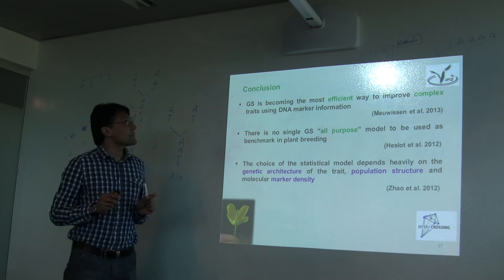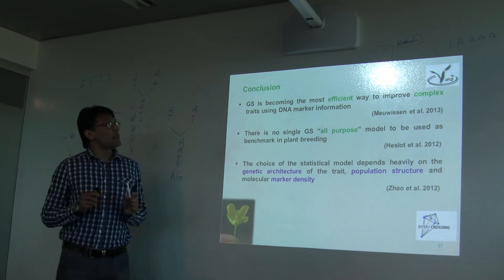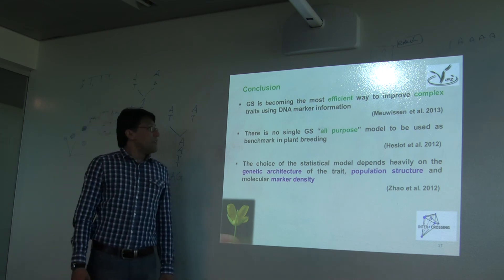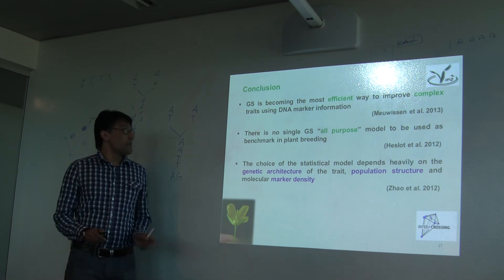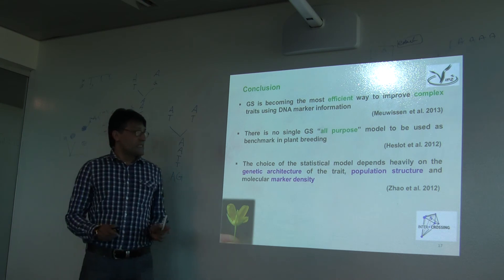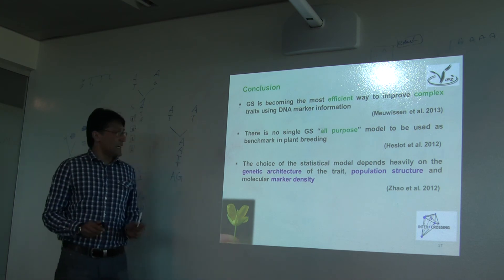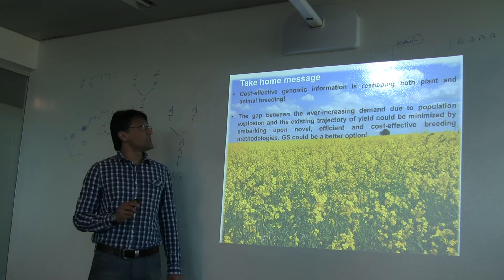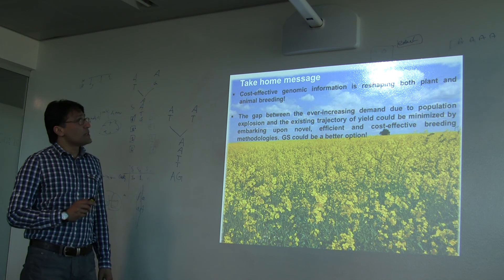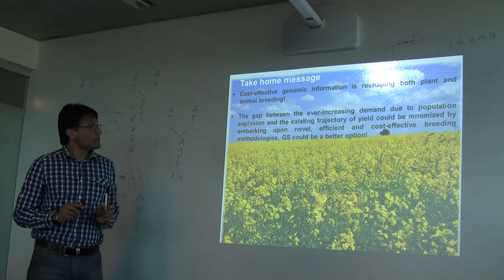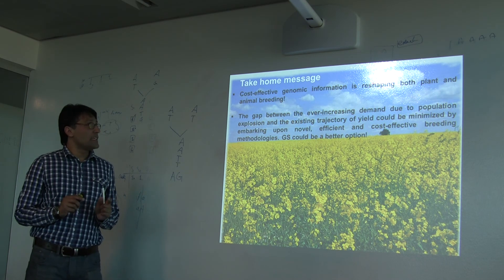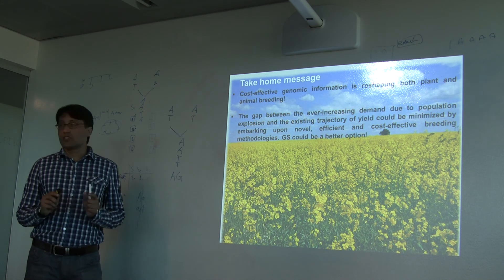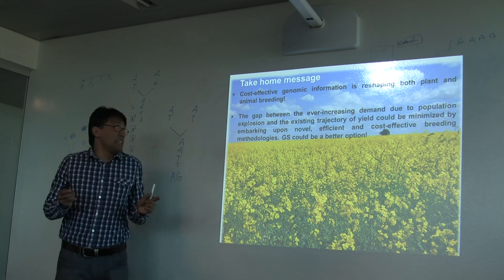Finally, coming to the conclusion: genomic selection is becoming the most efficient way to improve complex traits using DNA markers or SNP data. There is no single genomic selection model to be used as a benchmark in plant breeding — the choice of statistical model depends on the genetic makeup of the trait, population structure, and marker density. The take-home message is that cost-effective genomic information is reshaping plant and animal breeding. The gap between ever-increasing demand due to population explosion and the existing trajectory of yield could be minimized by embarking upon novel, efficient, and cost-effective breeding methodologies. Genomic selection could be a better option in that respect.